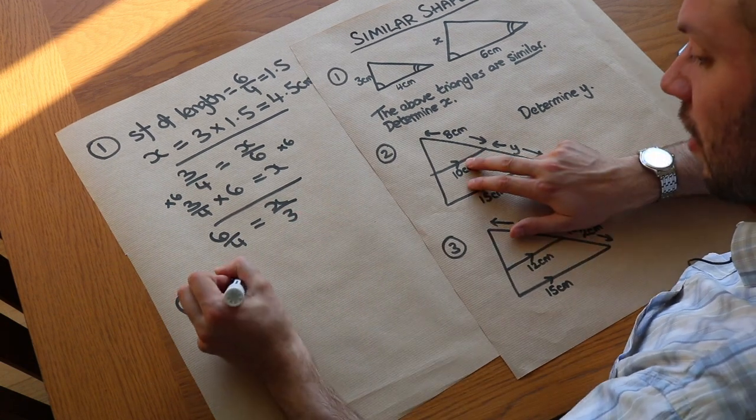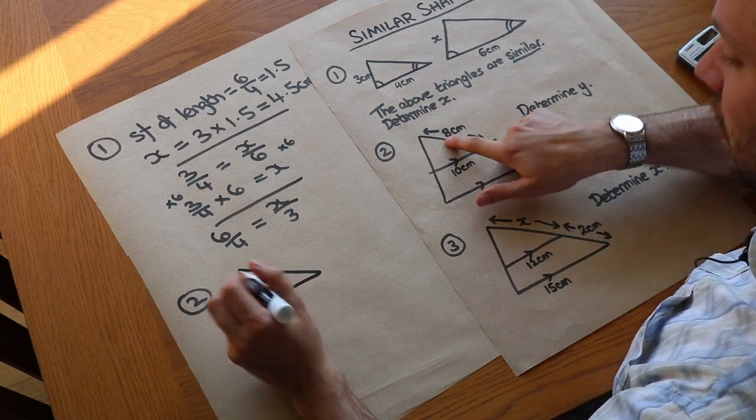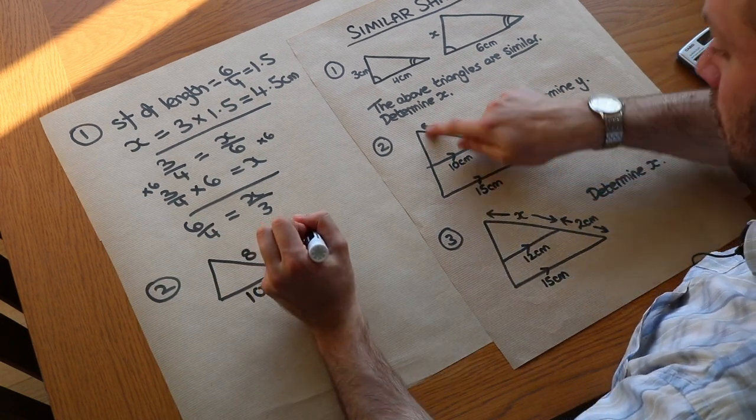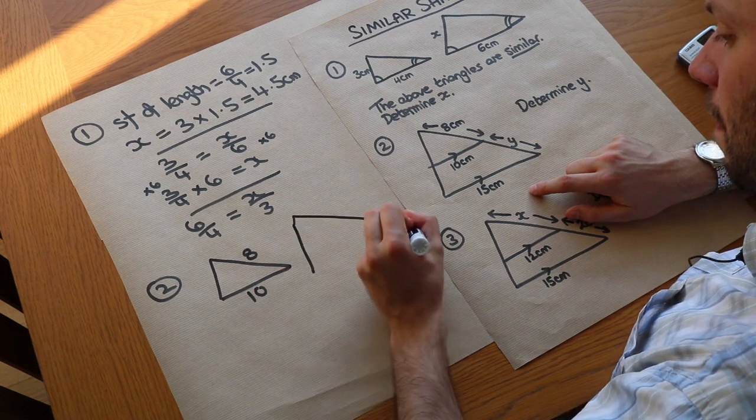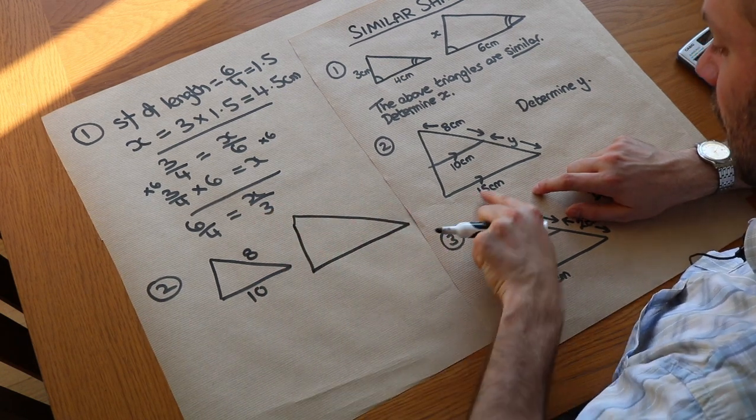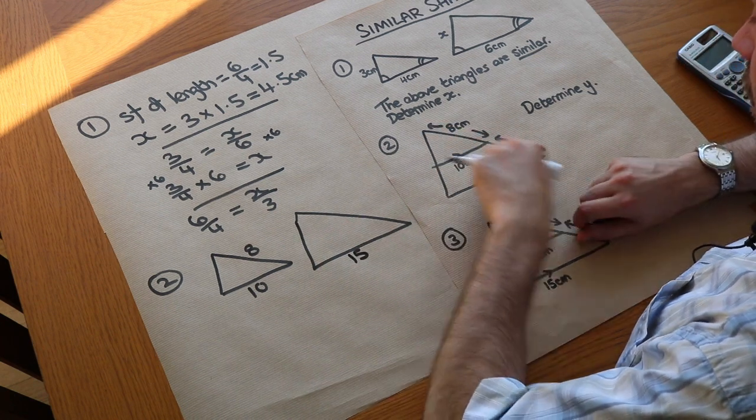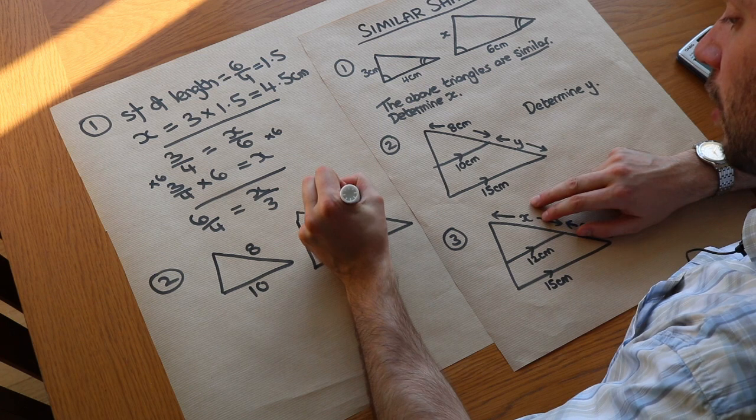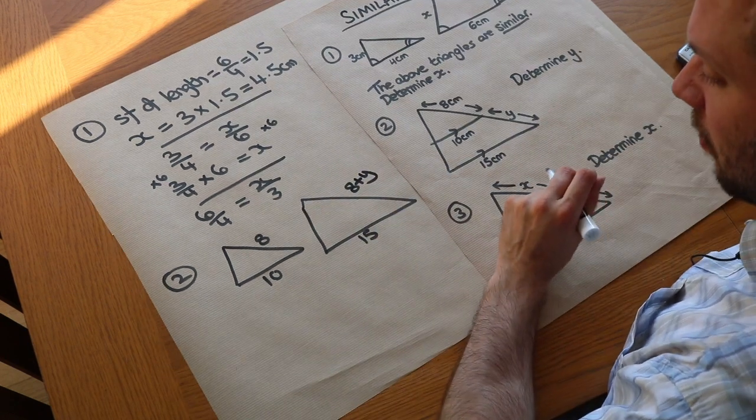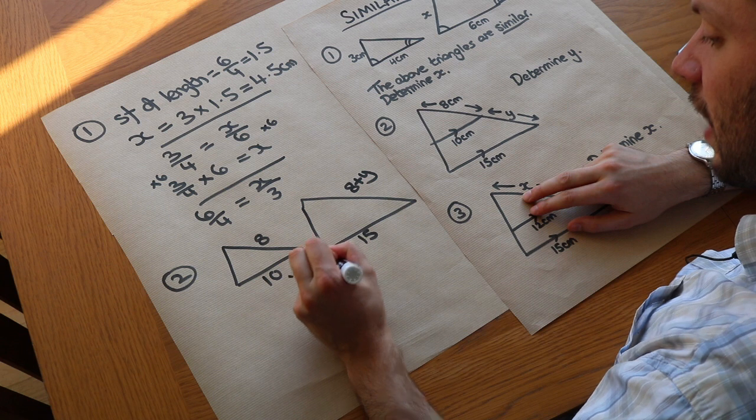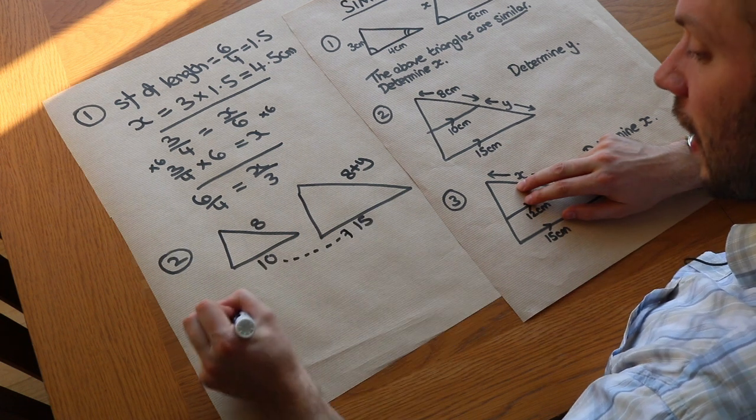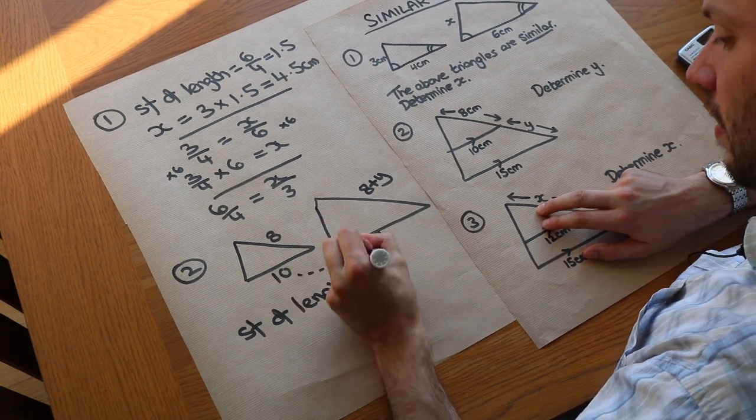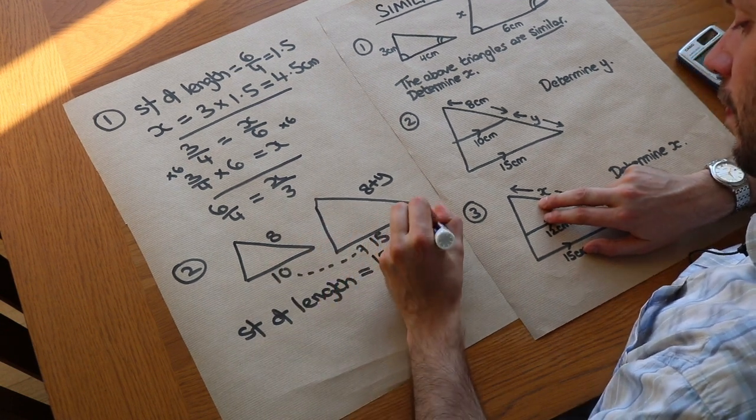Let's draw out the triangles separately. This is the top triangle with the 8 and the 10 here. If I draw the bigger triangle, the whole thing, we can see at the bottom we've got the 15, and this whole length of the bigger triangle is 8 plus y. We can do a similar thing to before—identify what the scale factor is. The scale factor of length is 15 divided by 10, which is 1.5.